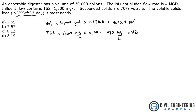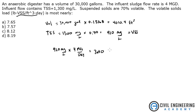So the volatile solids — we've got 910 milligrams per liter. If we multiply that by the 4 MGD, that will give us how much we have per day. We'll try to get that into a unit that we can work with. So that's 910 mg/L times 4 million gallons per day, which equals 3640 milligrams per liter times million gallons per day.